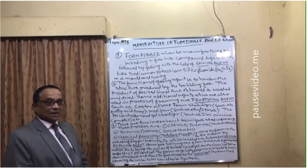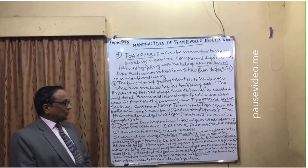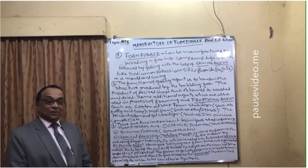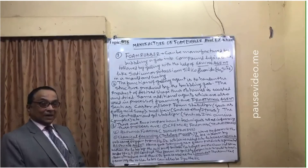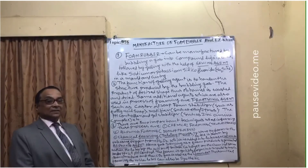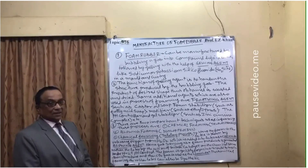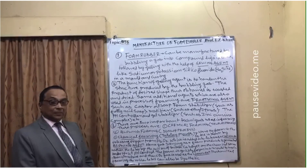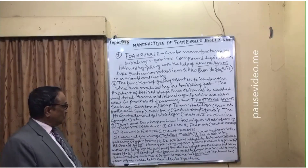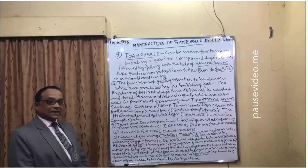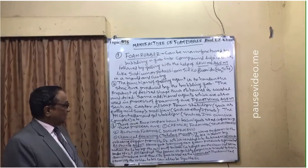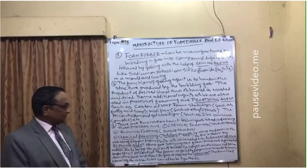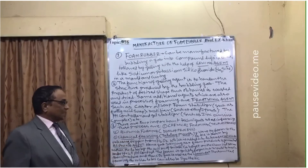There are two important techniques used to manufacture foam rubber. The first is called chemical foaming, where chemical reactions are involved — for example, hydrogen peroxide releases oxygen as a gas. This is known as the Talalay process. The second technique is known as air blowing foaming, which is called the Dunlop process.